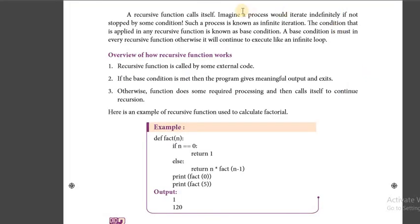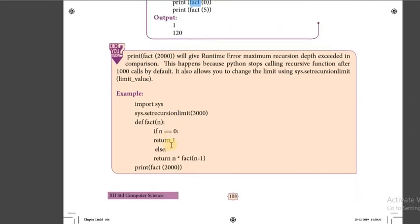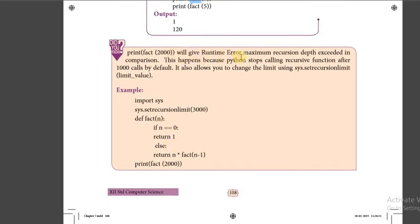Moving to the theory part: a recursive function is called by some external code. If the base condition is met, the program gives meaningful output and exits; otherwise it continues the loop. Printing factorial of 2000 will give a runtime error because Python stops calling the recursive function after 1000 calls by default, but using set recursion limit we can increase that value.